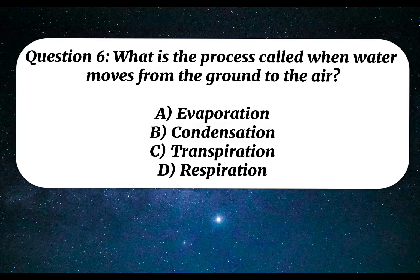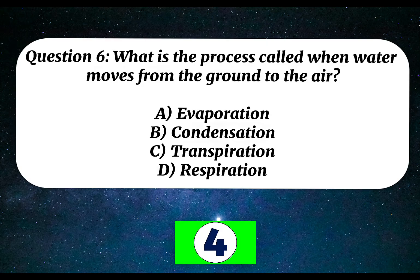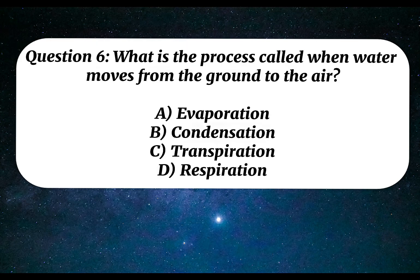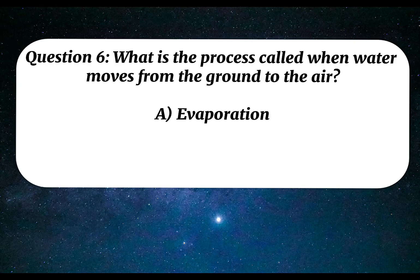Question 6. What is the process called when water moves from the ground to the air? A. Evaporation. B. Condensation. C. Transpiration. D. Respiration. Correct answer: A. Evaporation.